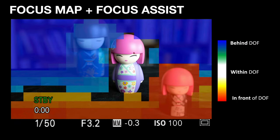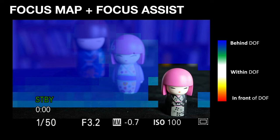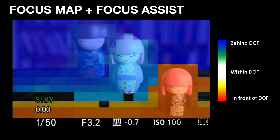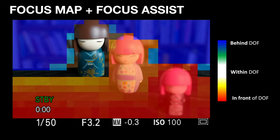We also have a feature called Focus Map — sort of an update to focus peaking, and some people will prefer to use it instead of traditional focus peaking. Everything that is blue is behind the depth of field, everything that is orange is in front of the depth of field, and anything that's clear is at the point of focus. It's a little more sophisticated than focus peaking because we know what is out of focus behind and what is out of focus in front. You'll see a lot of blue and orange here because I'm working with a very wide aperture close to the subject.